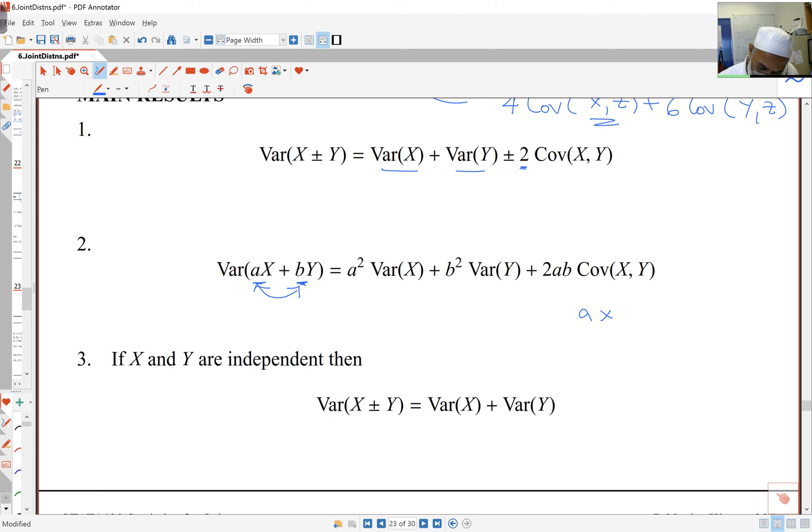I can think of this as ax and by, and ax and by. Variance of ax plus by becomes covariance of ax plus by, and ax plus by. The variance of something is the covariance of that thing with itself. So I've got here a squared, and then these two together become the covariance of x. Here I've got a times b times the covariance of x and y.